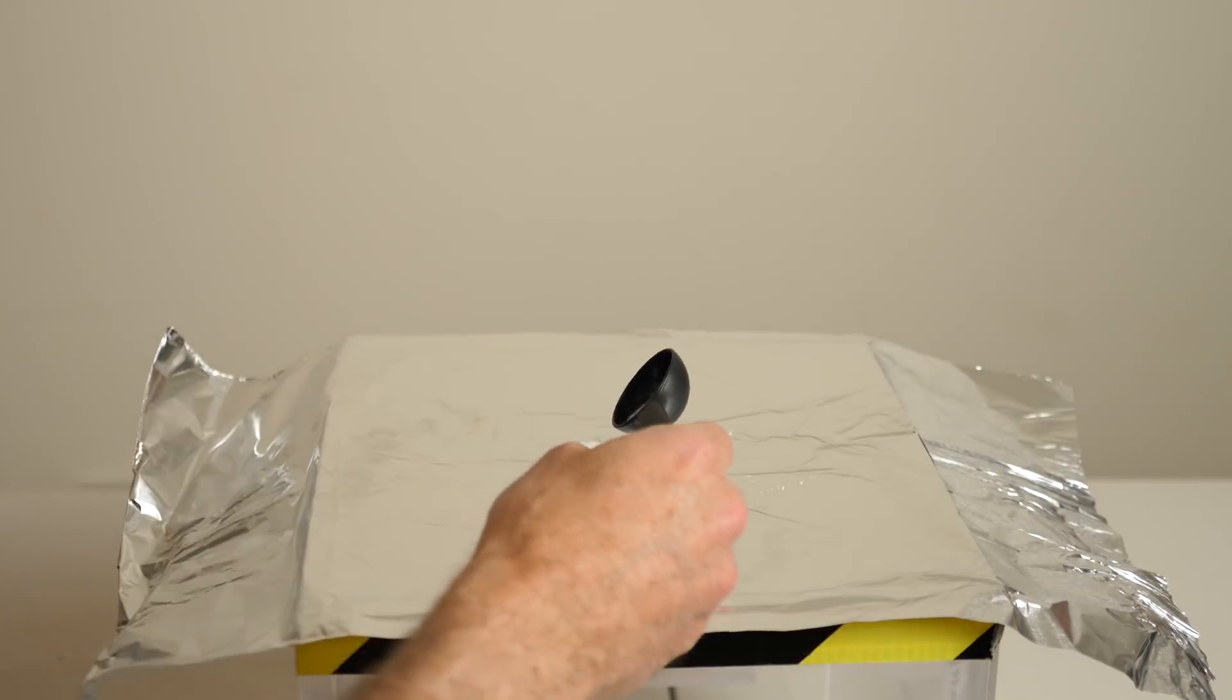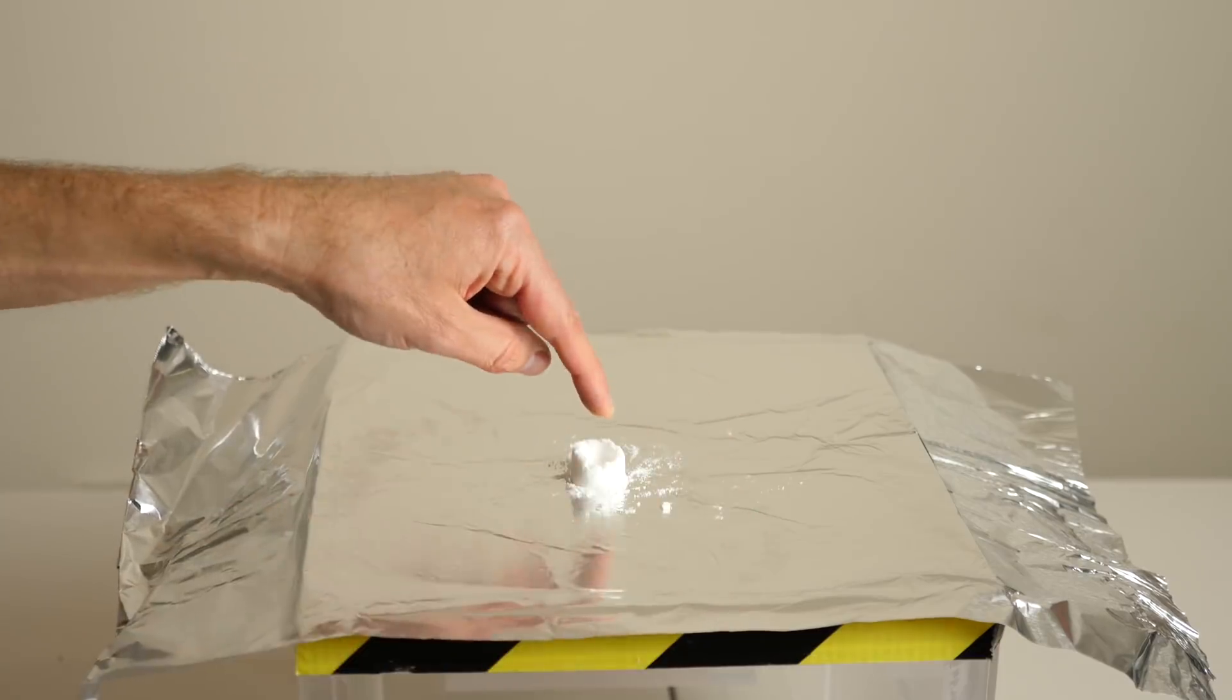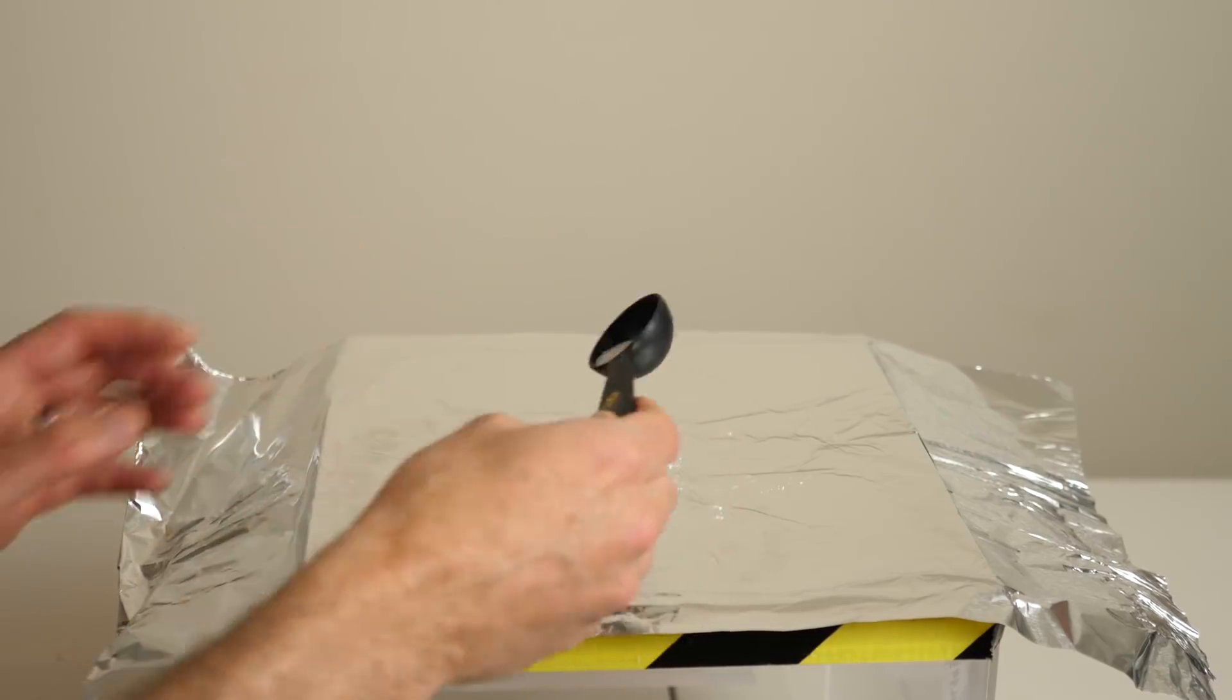And then what I have in here is sugar and baking soda mixed together. So let's watch what happens when I light it on fire. So I have a little divot in the center so the sugar can be surrounded by the fuel.